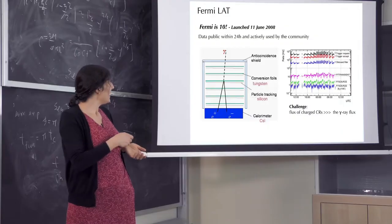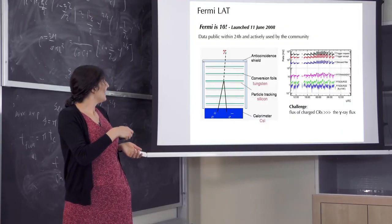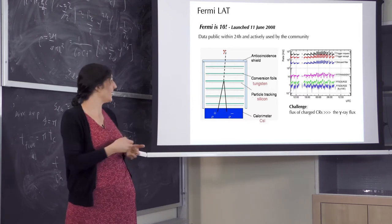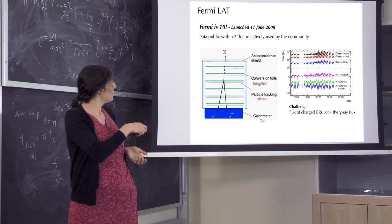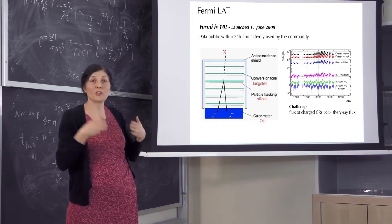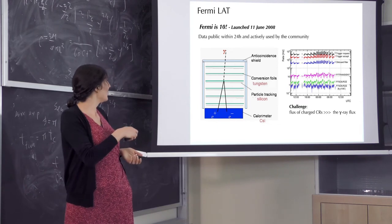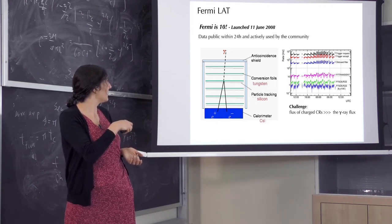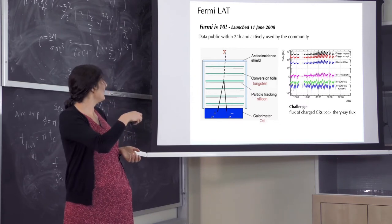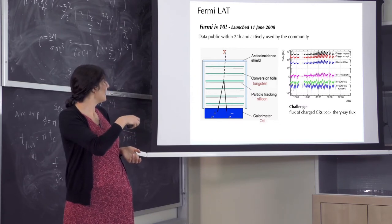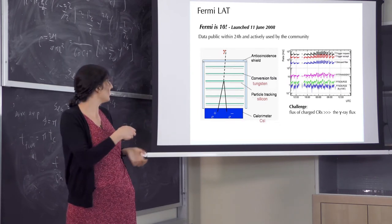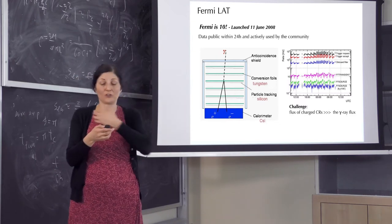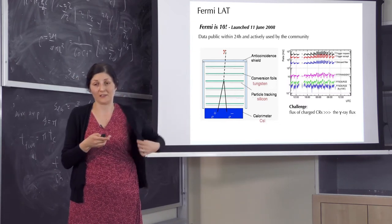One important thing to notice is that there are much more protons and electrons than photons in the cosmic rays. You have three, four orders of magnitude more hits on the telescope than actual photons. How that works is that we put an anti-coincidence detector around the detector, so that every time a charged particle passes, it blocks it. It tags it as a charged particle and we do not care about it. That's how we manage to reduce the backgrounds by a lot to actually be able to detect these rare photons.